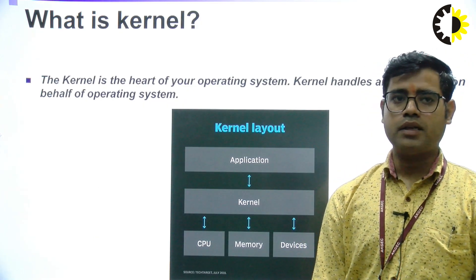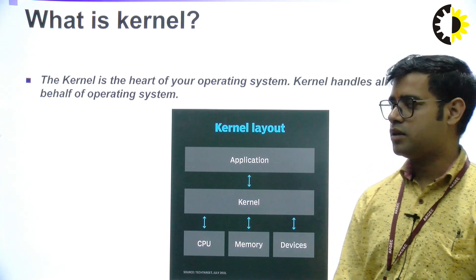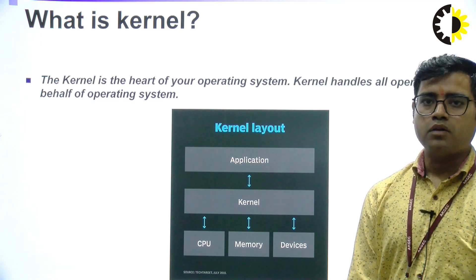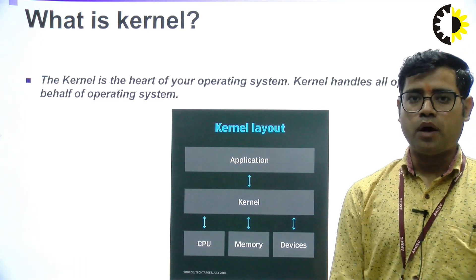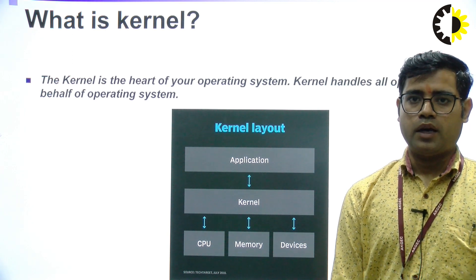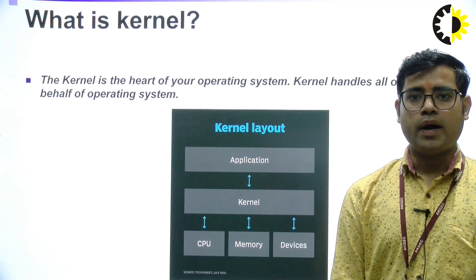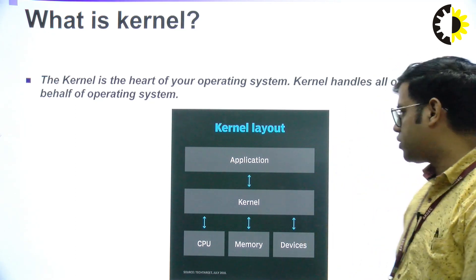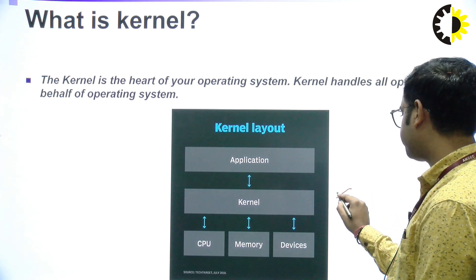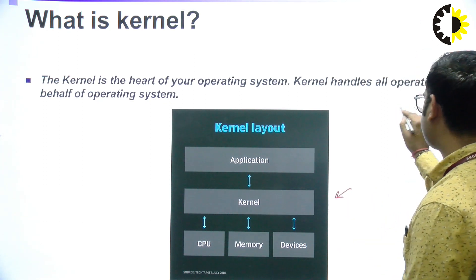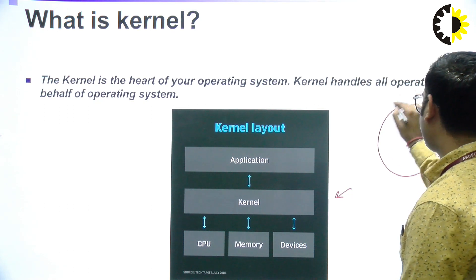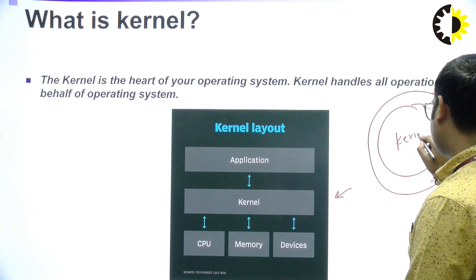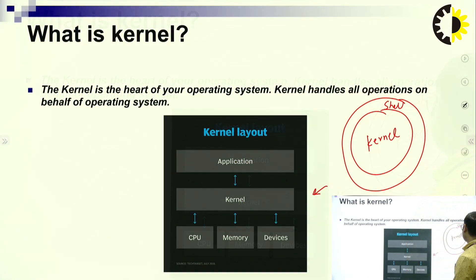What is kernel? The kernel is the heart of your operating system — it handles all operations on behalf of the operating system. Basically, kernel is the core part of an operating system. It provides an interface between the software and the hardware. The operating system is divided into two parts: first one is the kernel and the second one is the shell.